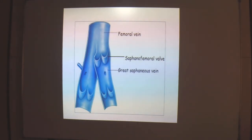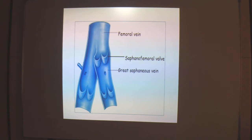The great saphenous vein has a large number of valves — about 10 to 20 — to prevent regurgitation as it drains blood against gravity. One valve is present just before it pierces the cribriform fascia. The saphenous-femoral valve is present at the junction with the femoral vein, and the femoral vein drains into the external iliac vein. The external iliac vein has a valve present in about 80% of people, which protects the saphenous-femoral junction against high pressure. The remaining 20% of people, in whom this valve is absent, are prone to varicose veins.